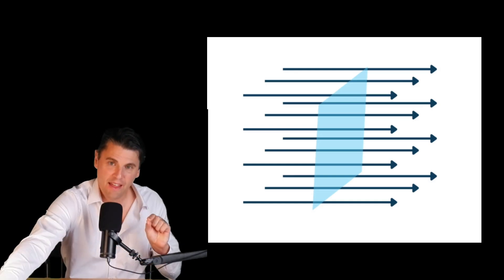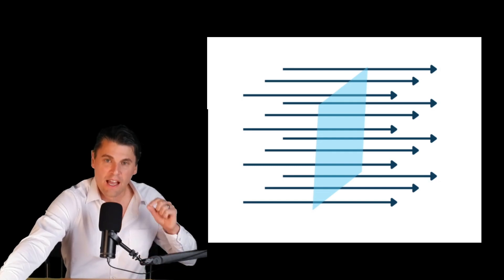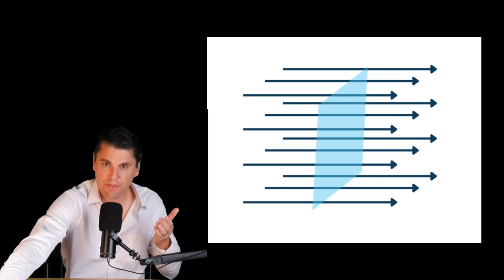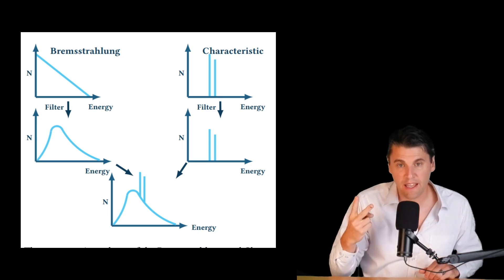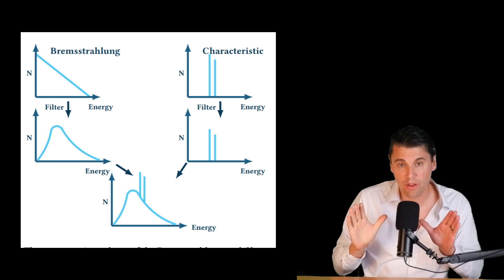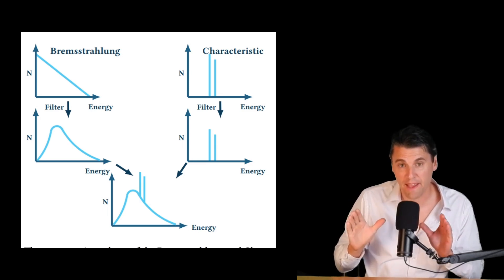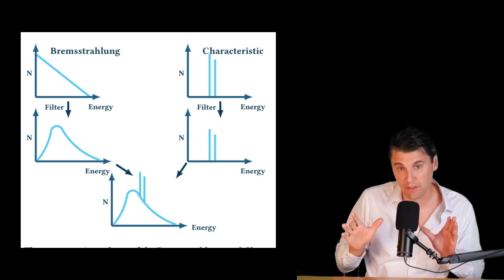And if we want to break that down further into essentially how many x-rays of different energies are coming in, we can talk about something that we call the x-ray spectra. Hopefully you've seen our videos on bremsstrahlung and characteristic. Those are the two interactions that govern the way that x-rays are made on your x-ray tube.